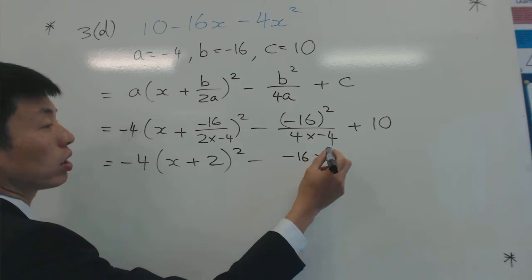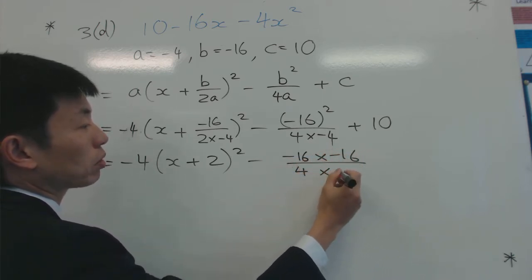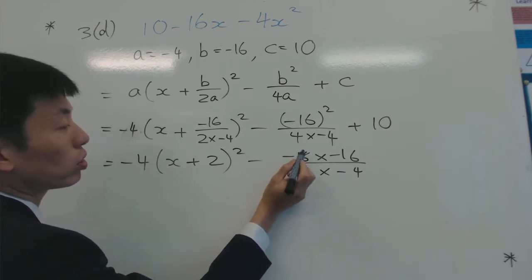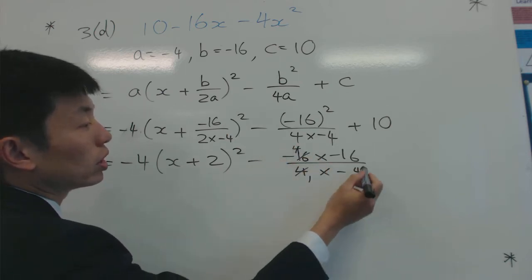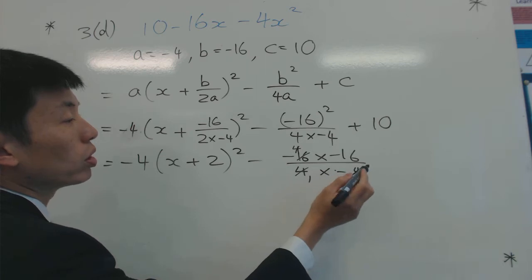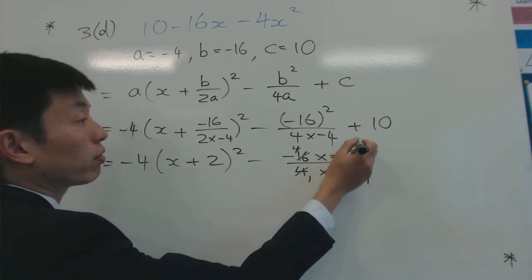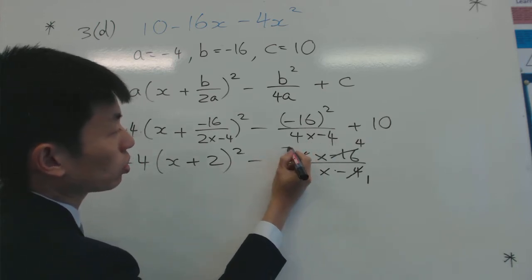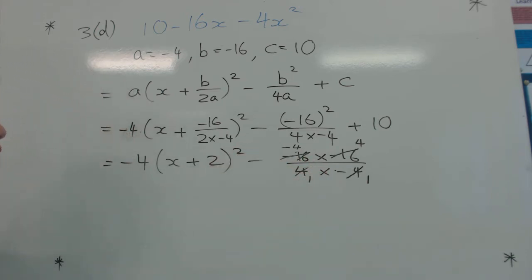4 times minus 4... well, 4 going into 4 one time and 4 going into 16 four times, so that's minus 4. And minus 4 going into minus 16 again, 4 times. So let me just tidy this one - let's just cross this out and say minus 4, and then that 10.